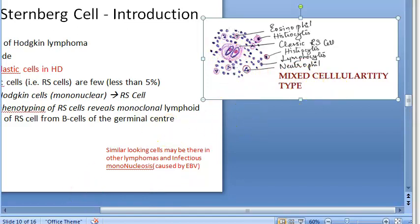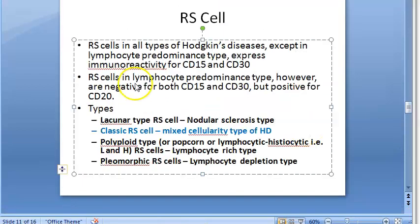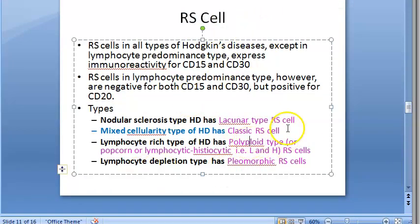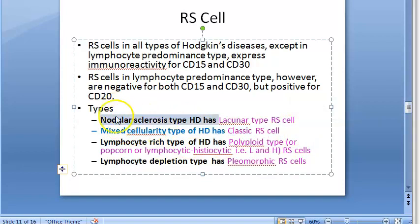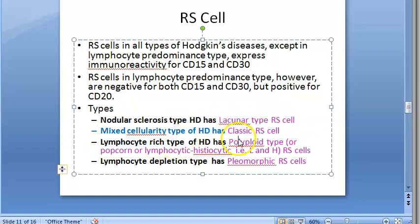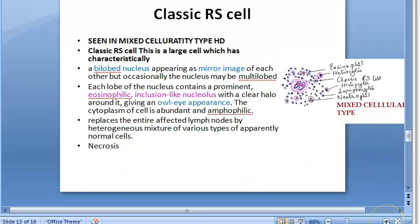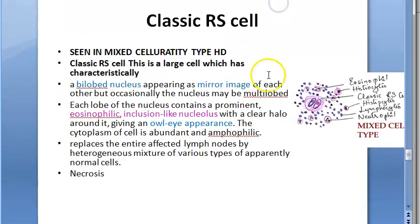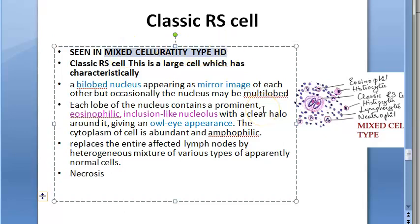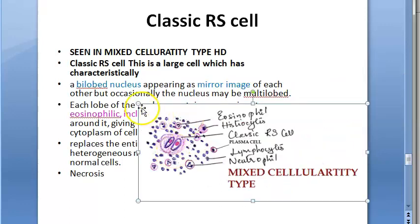Each type of Hodgkin disease has its own type of Reed-Sternberg cell. Mixed cellularity has the classic RS cell. Nodular sclerosis has the lacunar type of RS cell. Lymphocyte rich has the polypoid or popcorn type. Lymphocyte depletion has the pleomorphic Reed-Sternberg cell.